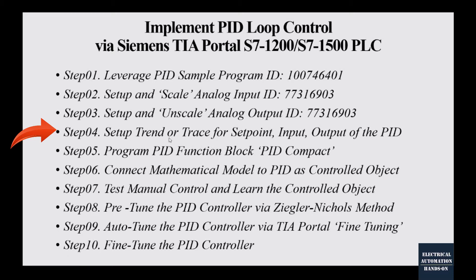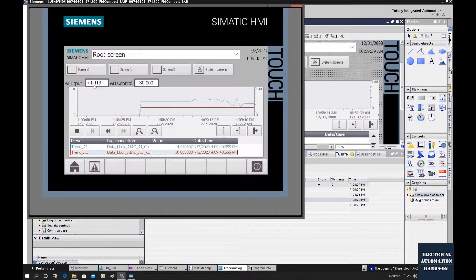Since we can use the simulation of the HMI function, when we use this trend function, we do not need an actual HMI touch panel — we can use a laptop to run this trend. Let's go to the TIA portal and set up the HMI project. Method 2: we will use HMI and use the trend function from the HMI.